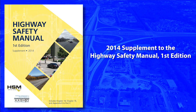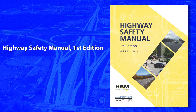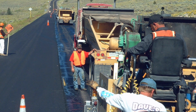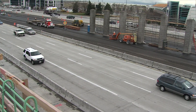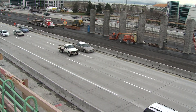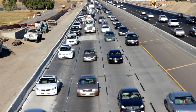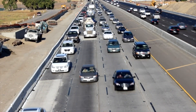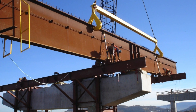AASHTO has just released a new supplement to the Highway Safety Manual First Edition. Published in 2010, the Highway Safety Manual was designed as a resource that provides analytical tools for highway professionals and safety practitioners to enhance the consideration of safety in the highway development process, and to better quantify and predict the expected impact of safety decisions in all phases of highway project development.